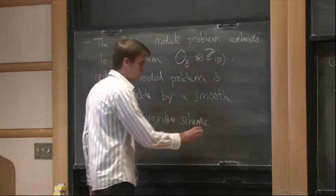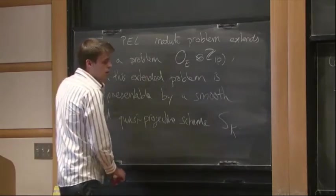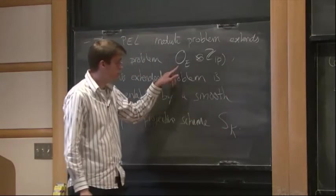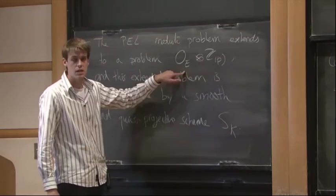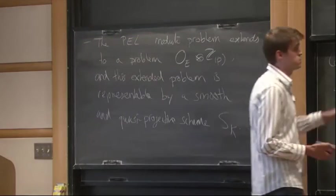So I also write SK for this scheme. So right now SK is defined over this ring here. And so you can reduce SK modulo prime, modulo prime numbers.